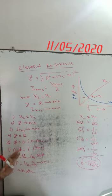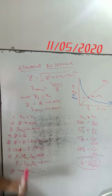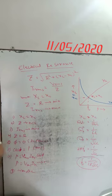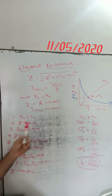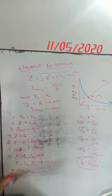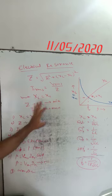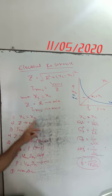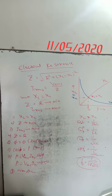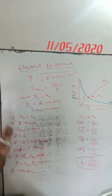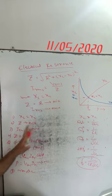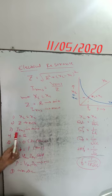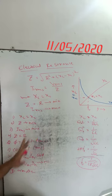Now the salient features or characteristics of the electrical resonance circuit. The first condition is XL equals XC — inductive reactance equals capacitive reactance. The second condition is the impedance in the circuit must be minimum. The third condition is the RMS value of current must be maximum.